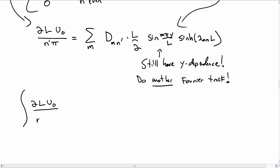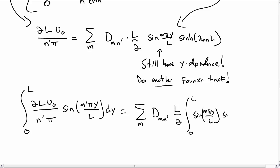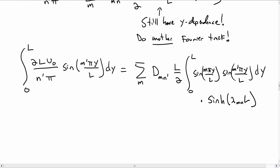We multiply both sides again by a sine function, now it's sin(m'πy/L) and integrate from 0 to L in the y direction. On the right hand side we still have a sum over m, the constant d_mn', the L/2, and now we have an integral over the y direction of sin(mπy/L)sin(m'πy/L) dy. There's still our sinh(λ_mn·L) which is always going along for the ride here.